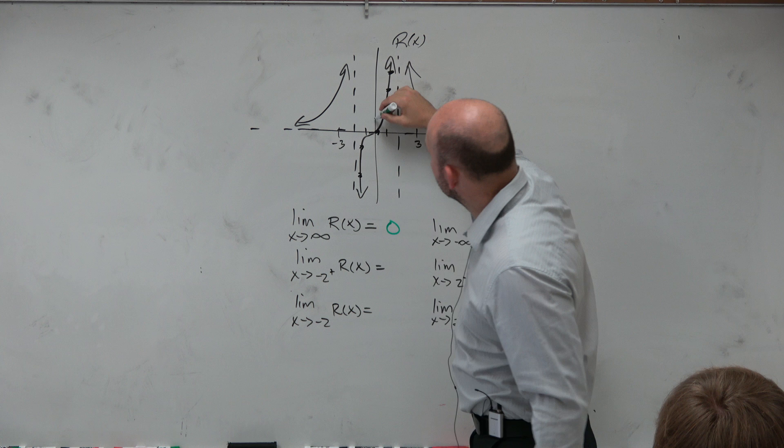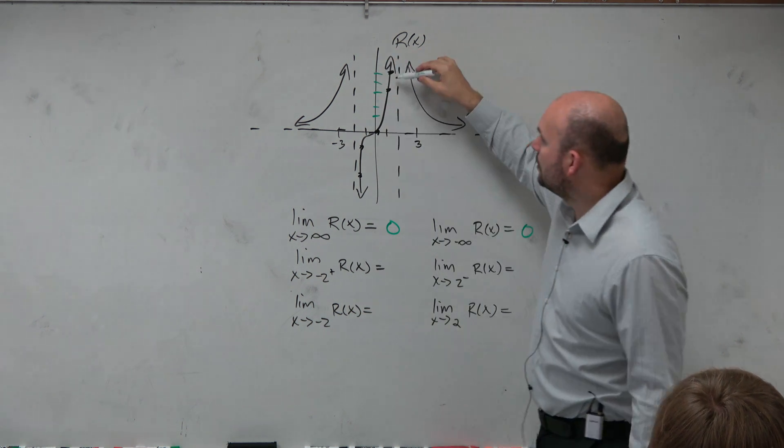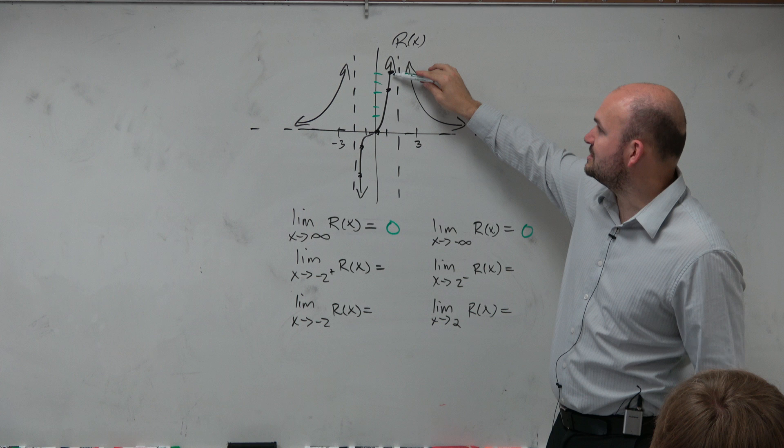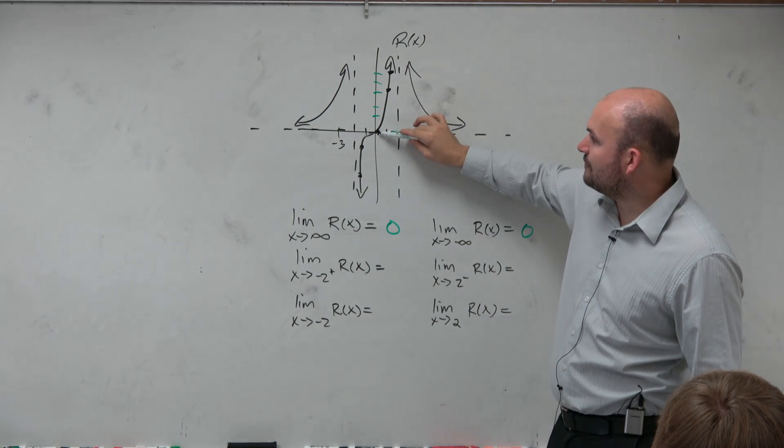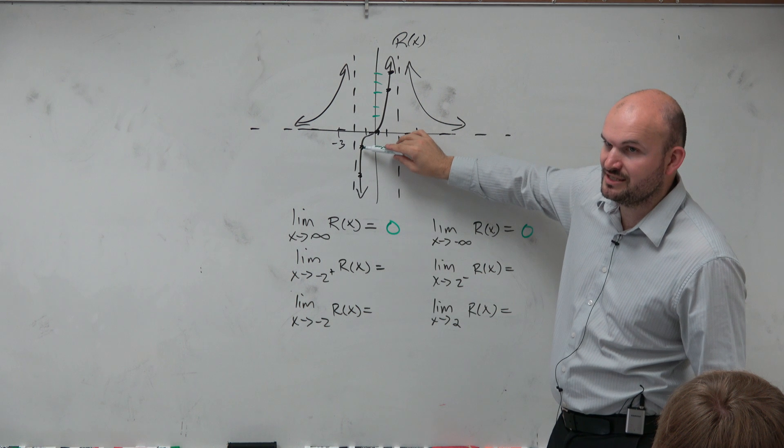Let's pretend this is 1, 2, 3, 4, 5. So at this value, r of x is 5, right? At this value, r of x is 3. Here, r of x is 0. Let's pretend r of x is negative 2.